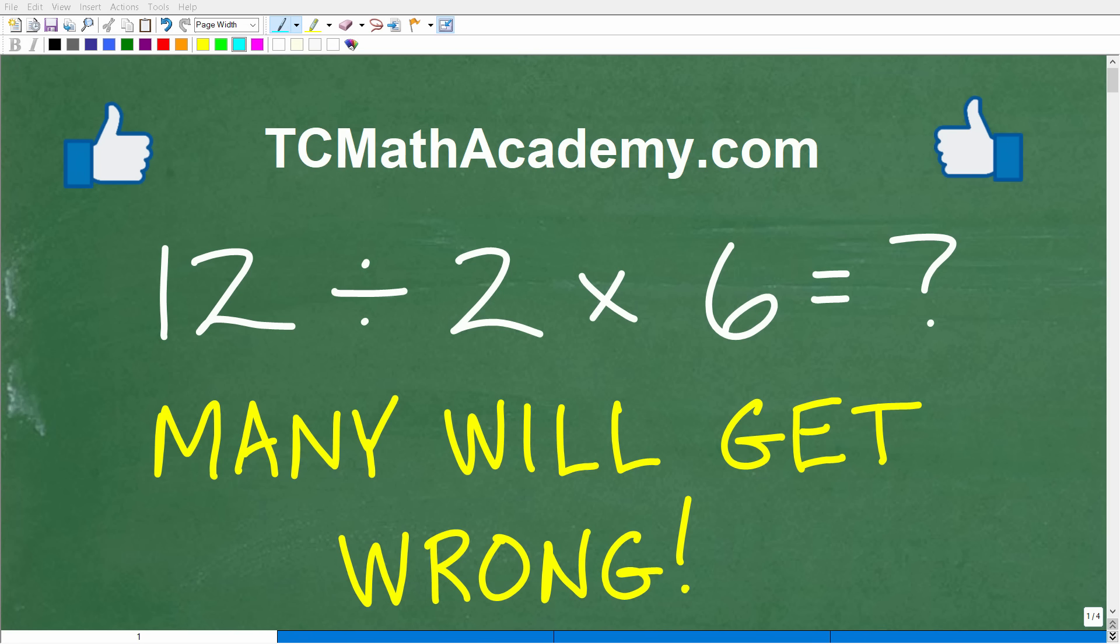Okay, so a lot of people that think they understand basic math are actually going to do this simple math problem wrong. The only rule here is no calculator. As a matter of fact, let's go ahead and take a look at the question. We have 12 divided by 2 times 6. What is the answer?